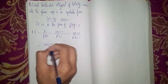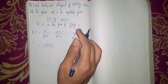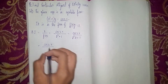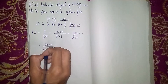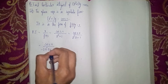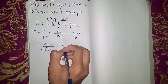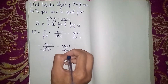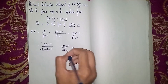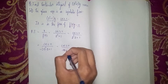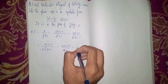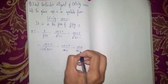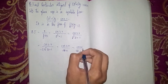We have cos(2x) / (D² × D + 1), which becomes cos(2x) / (D² + 1). For every trigonometric function, we substitute D² = −a², so D² = −2² = −4. This gives us cos(2x) / (−4D + 1), which becomes cos(2x) / (1 − 4D).